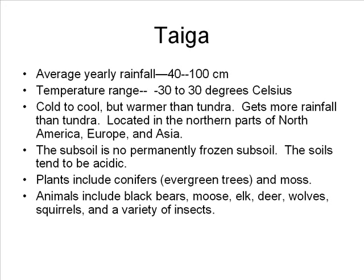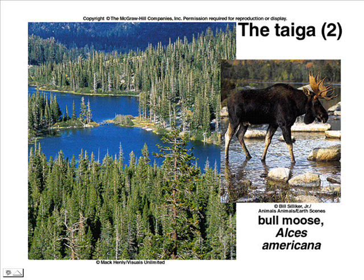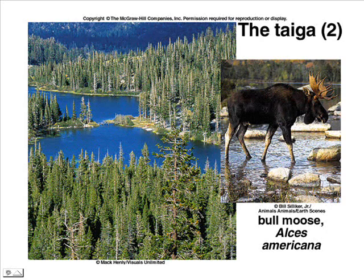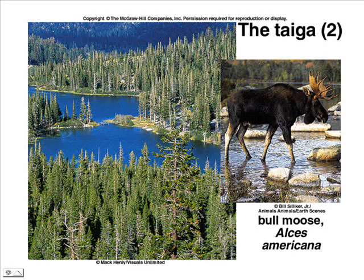The taiga is typically located in the northern parts of North America, Europe, and Asia. The subsoil is not permanently frozen, but soils tend to be quite acidic. Typical plants include conifers or evergreen trees like pines and mosses. Animals include the black bear, moose, elk, deer, wolves, squirrels, and a large variety of insects.